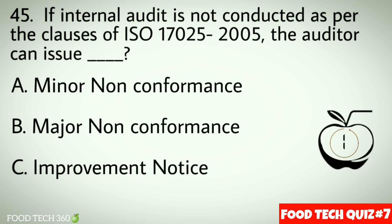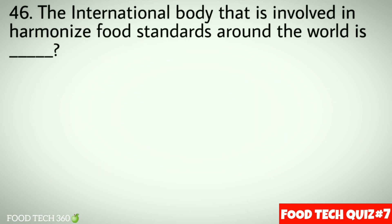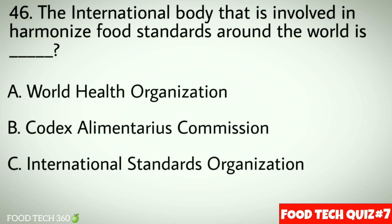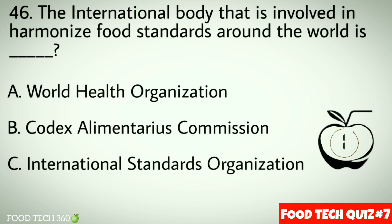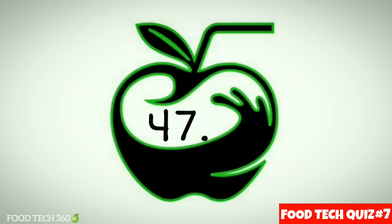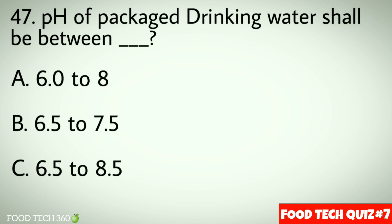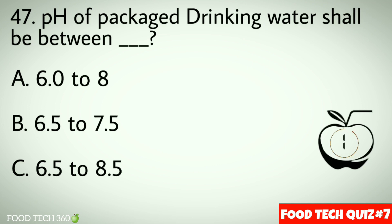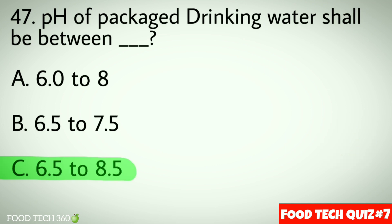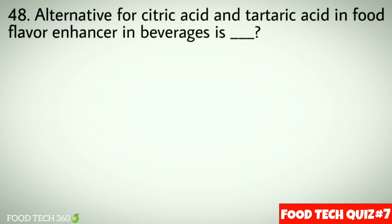Question number 46: The international body that is involved in harmonizing food standards around the world is — options: a) World Health Organization, b) Codex Alimentarius Commission, c) International Standards Organization. Correct answer: b) Codex Alimentarius Commission. Question number 47: The pH of packaged drinking water shall be between — options: a) 6 to 8, b) 6.5 to 7.5, c) 6.5 to 8.5. Correct answer: c) 6.5 to 8.5.